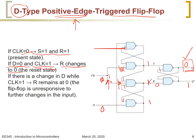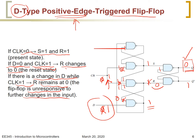If there is a change in D while the clock is equal to 1, R will remain 0. Suppose we make D=1 while the clock is still 1 — since R became 0 earlier, the gate output stays fixed and the flip-flop is unresponsive to any further changes in the input. That is a quick description of the positive edge-triggered D flip-flop for the case where D equals 0.